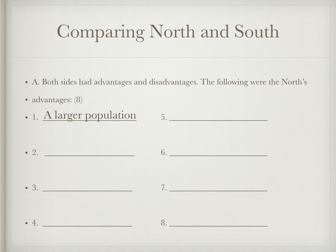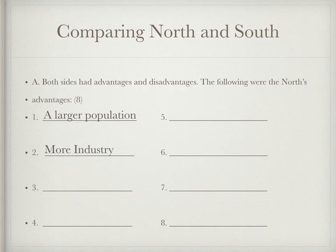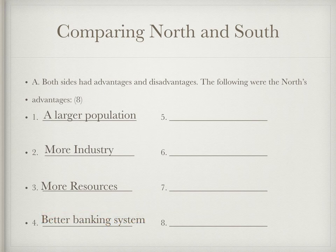One: a larger population — the more people you have, the more you have to fight. Two: more industry, meaning manufacturing. Of all the manufacturing in the United States in 1860, 90% of it happened in the North. Three: more resources — everything from railroads to trains. Four: a better banking system, making the North financially stronger than the brand-new Confederacy. Five: more ships and more loyal Navy members.